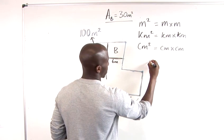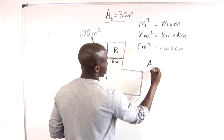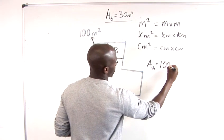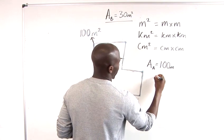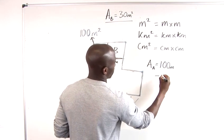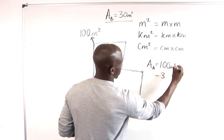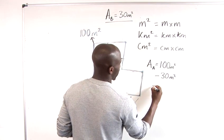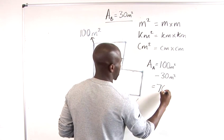So the area of A is equal to 100 metres squared subtracting 30 metres squared. And that leaves us with 70 metres squared.